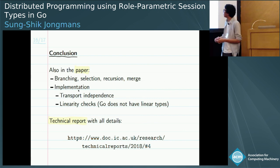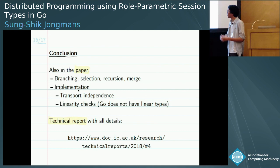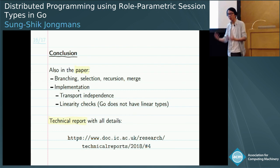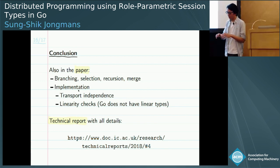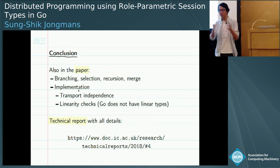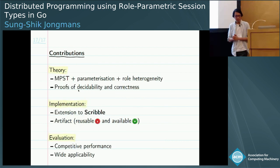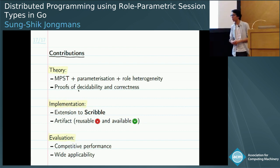The paper also contains more details on the global type language, more implementation details including transport independence — providing programmers a uniform interface for both TCP and shared memory, which was an important feature of PGET — and there is a technical report with even more details. To summarize, the contributions are the extended theory with parametrization and role heterogeneity, the Scribble implementation, and the evaluation. Thank you very much for your attention.